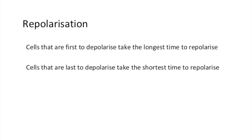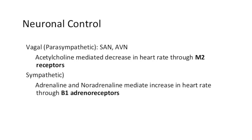Regarding vagal and sympathetic stimulation: vagal stimulation, which acts on the SA node and AV node only, is used to slow the heart rate. The vagal nerve releases acetylcholine onto muscarinic 2 receptors, which reduces cyclic AMP to reduce the activity of all the ion channels in the pacemaker potential, effectively prolonging each of the different phases.